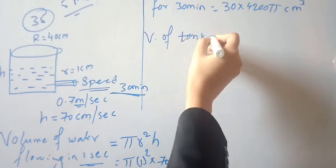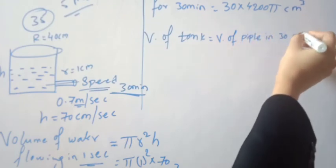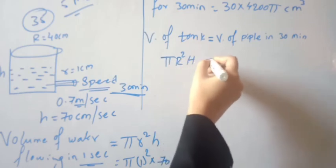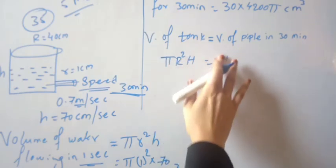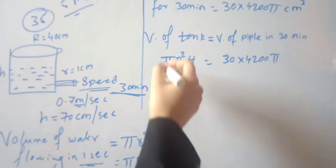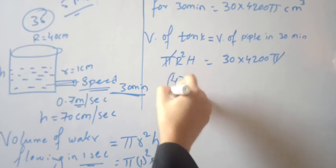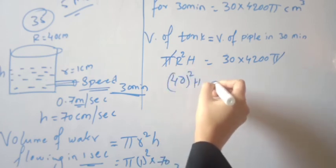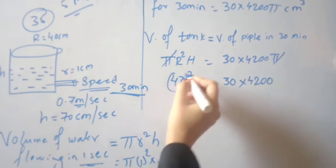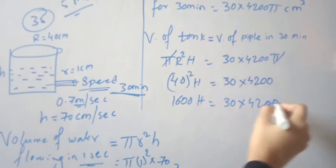Volume of tank risen equals volume of pipe flow in 30 minutes. So: pi times R squared times H equals 30 times 4,200 times pi. Pi cancels from both sides. R of the tank is 40 cm, so R squared equals 40 squared equals 1,600. Therefore: 1,600 times H equals 30 times 4,200.